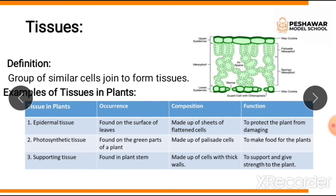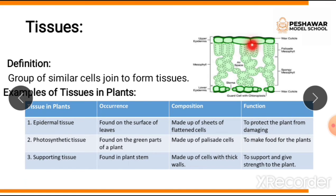Epidermal tissue is found on the surface of leaves — both the upper and lower surfaces. In the diagram you can see the upper epidermis and lower epidermis. Their composition is sheets of flattened cells, visible as a flat layer in the diagram. Their function is to protect the plant from damage, as they form the outer layer of the leaf.